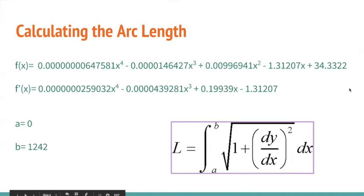With the original function, I derived it using the power rule and got the derivative f prime. As mentioned in my last slide, a is 0 and b is 1242. Then I plugged these numbers into the arc length formula which is outlined in the purple.